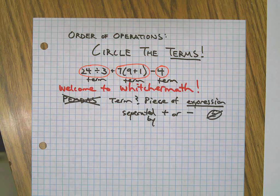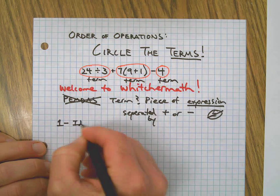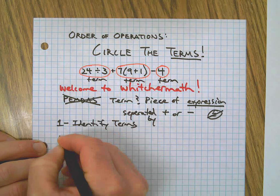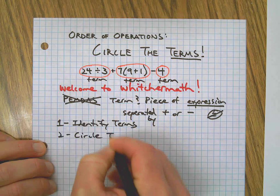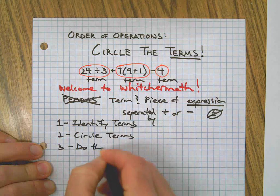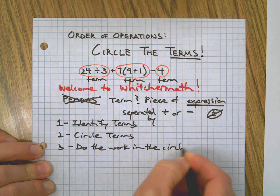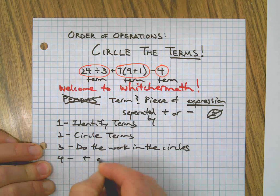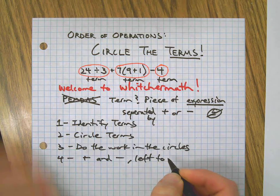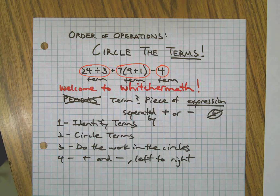For circle the terms to work, first you need to be able to identify a term. Then it's easy - you just circle it. Step one: identify the terms. Step two: circle them. Step three: do the work in the circles. And then you just add and subtract from left to right, since addition is commutative and all that.